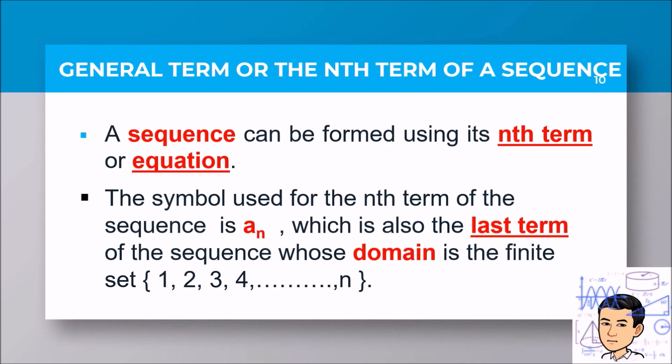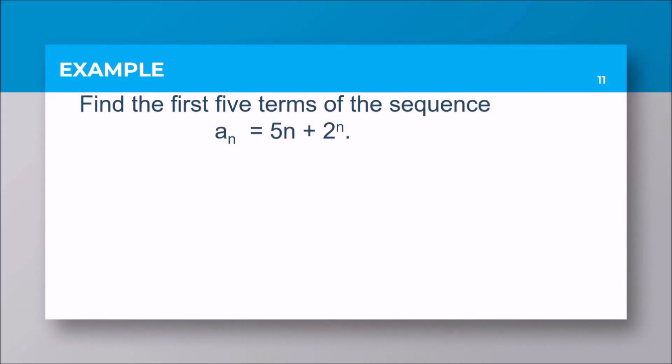A gentle reminder for everyone: you must be good at substitution because you don't have a substitute at home to do it for you. Just do it - you can do it! Here's an example. Find the first five terms of the sequence a sub n equals 5n plus 2 raised to n. For the first term, substitute n equals 1. Copy the equation, then plug in n equals 1. Simplify: 5 times 1 is 5, 2 raised to 1 is 2, so 5 plus 2 equals 7.